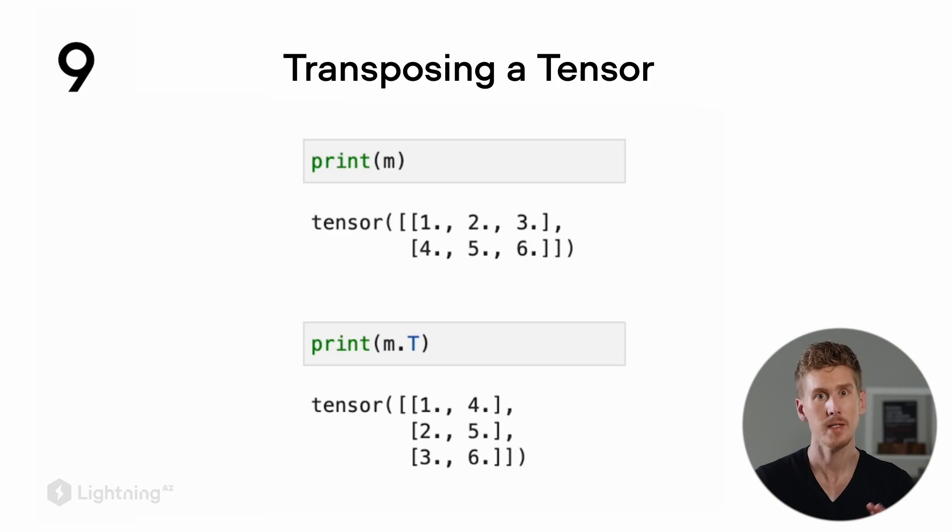Related to reshaping, there's also the concept of transposing a tensor. This is related to matrix transpose, if you've heard of it before. Transposing a matrix essentially means flipping it along its diagonal.